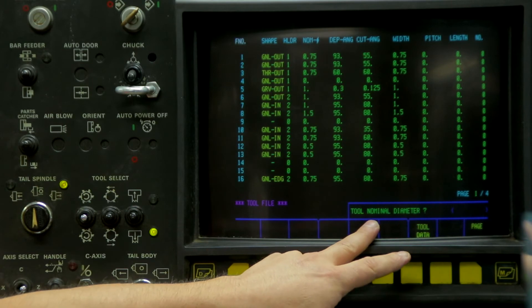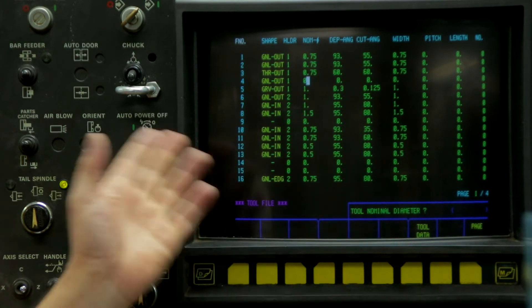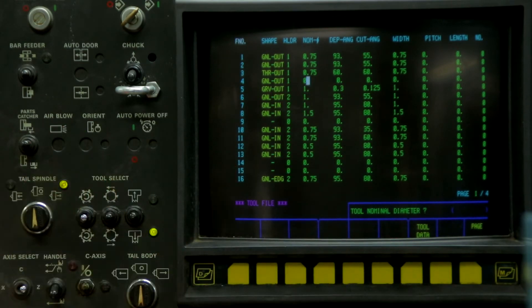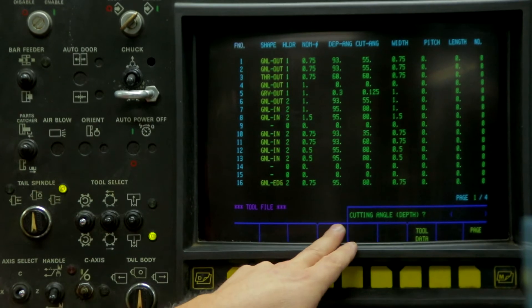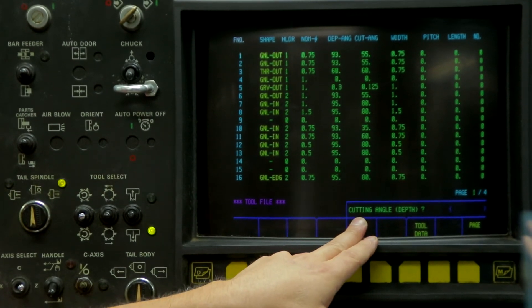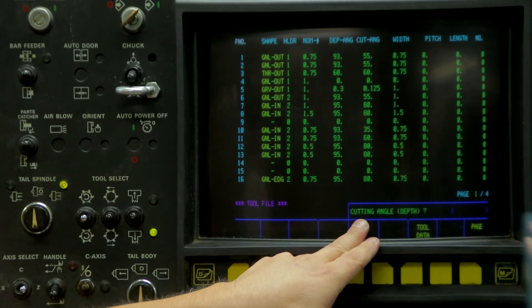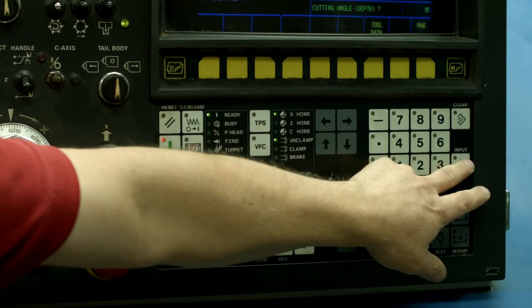The tool nominal diameter, this is more for milling, but you can also put in the shape diameter. So now this one is the cutting angle, this is the first angle from the paper, so 95 degrees.